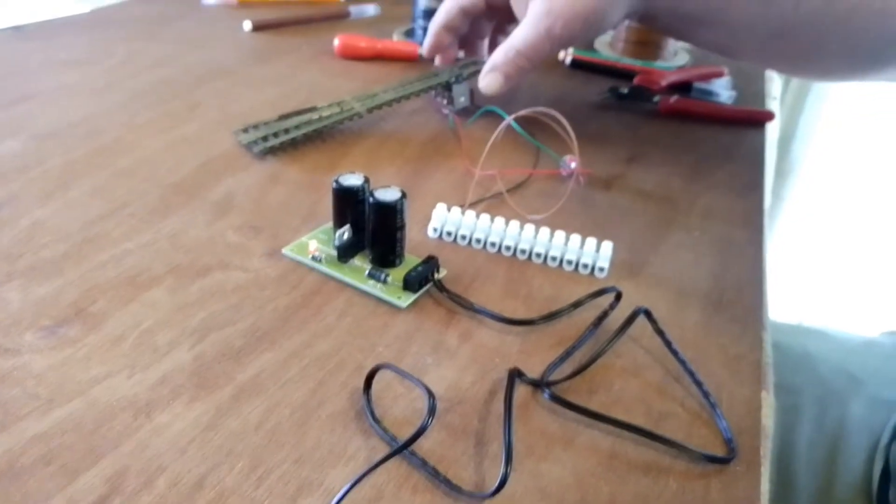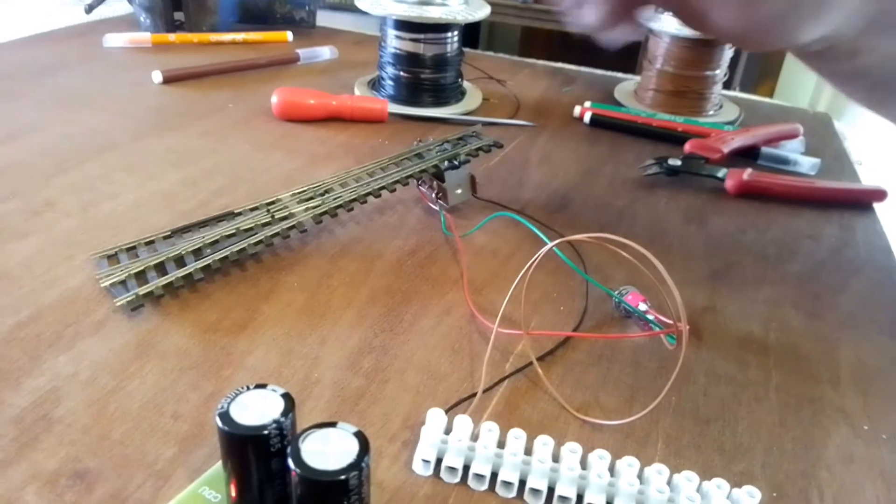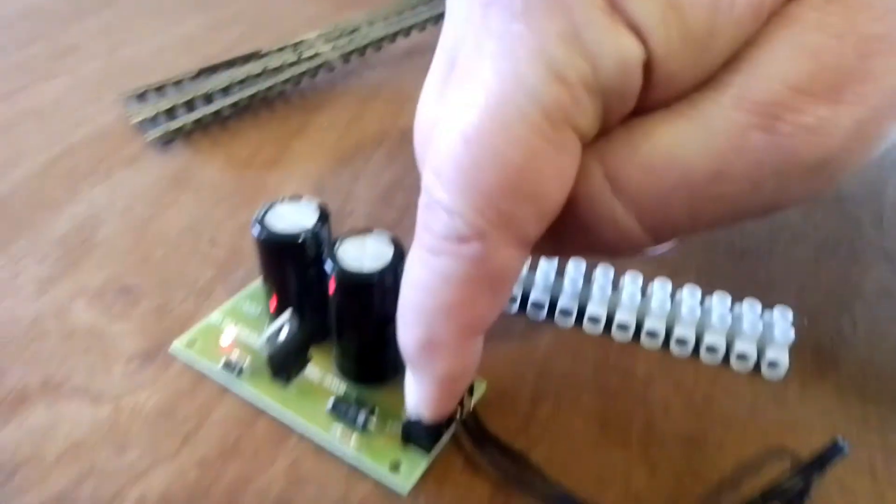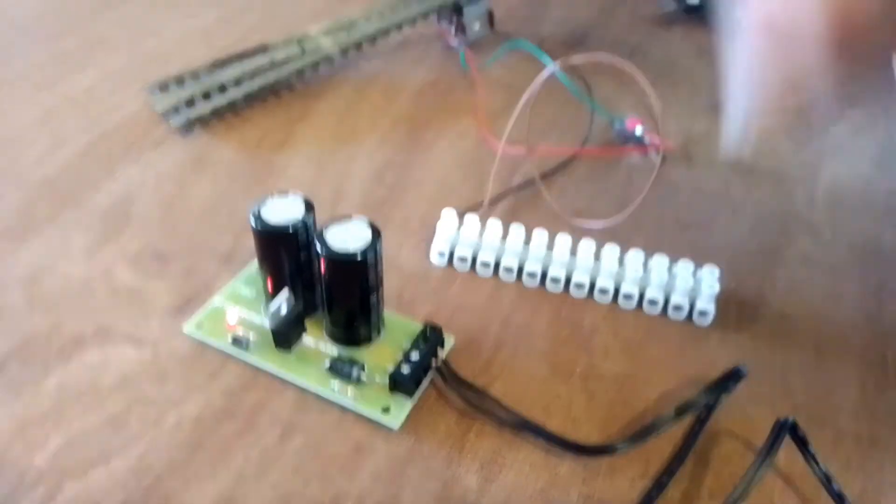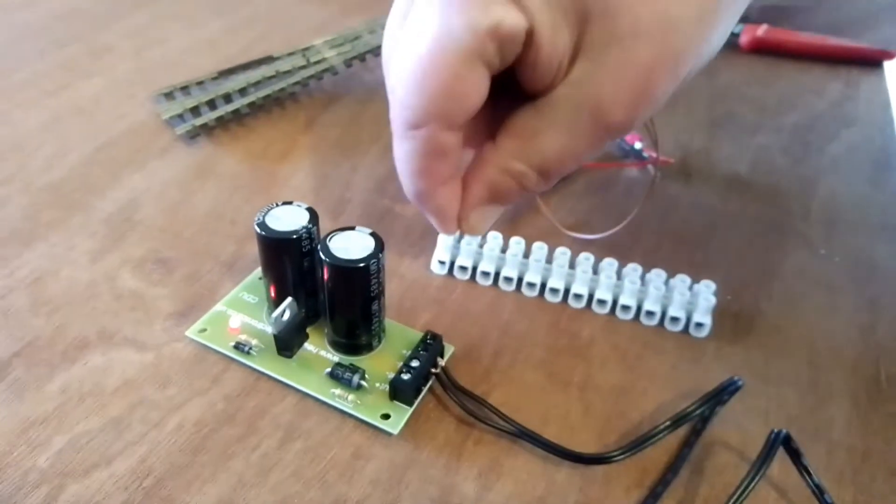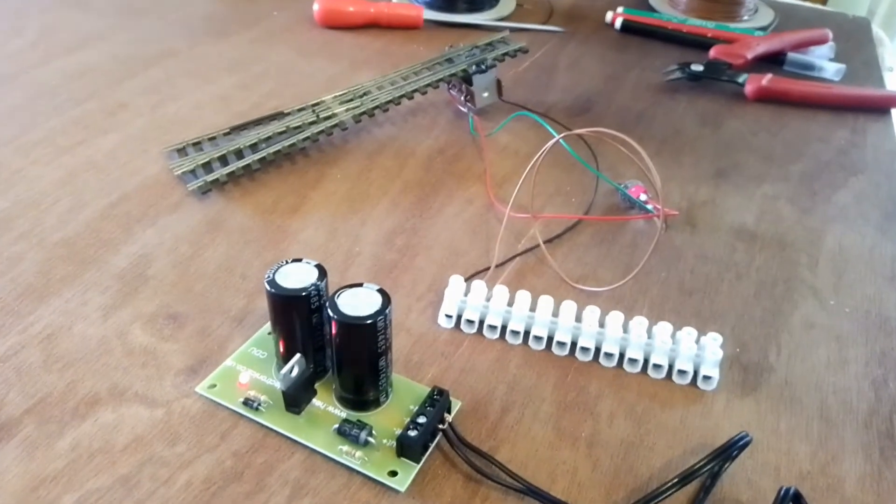This is a setup from the previous video I explained about solenoid point motors. What I'm going to do now is just connect the output of the CDU into these two terminals. Originally these two wires went directly into those terminals. After I've connected it up we can just see the point motors changing.